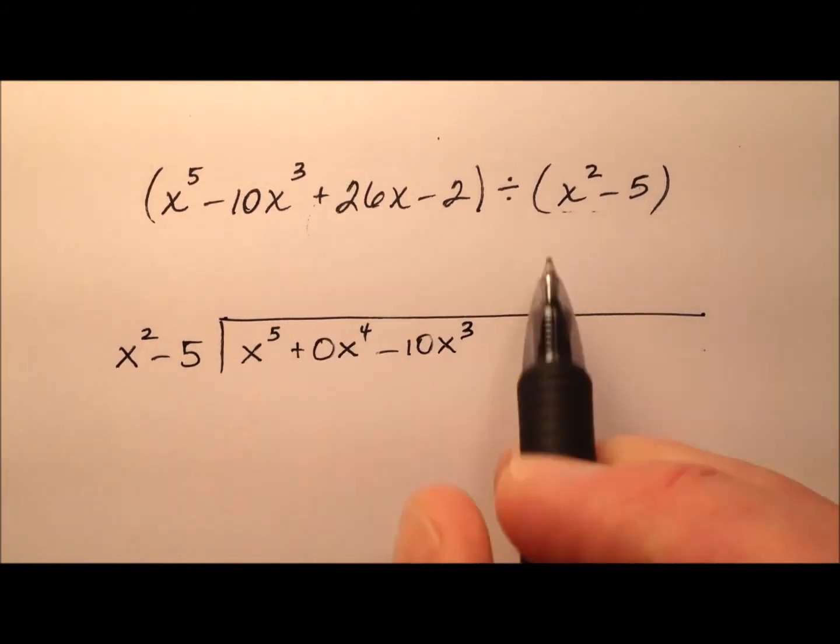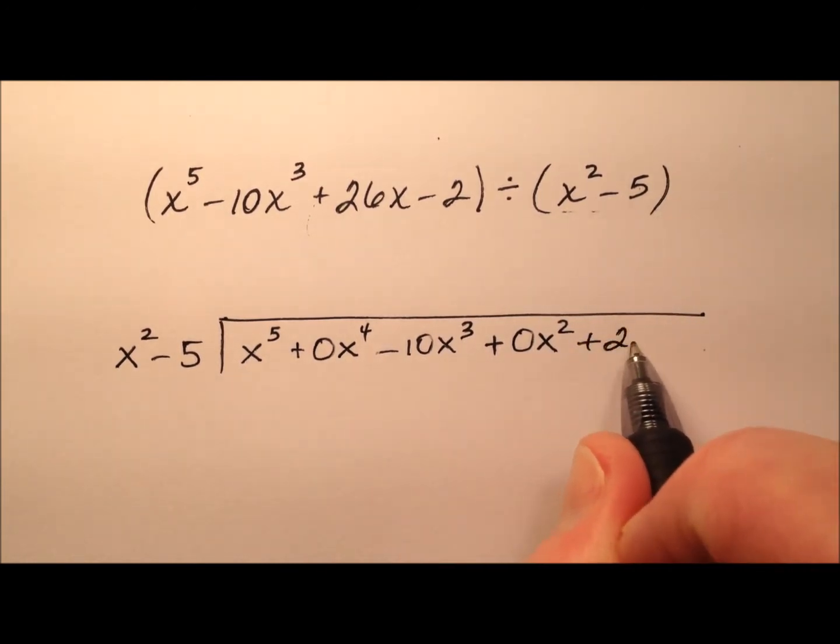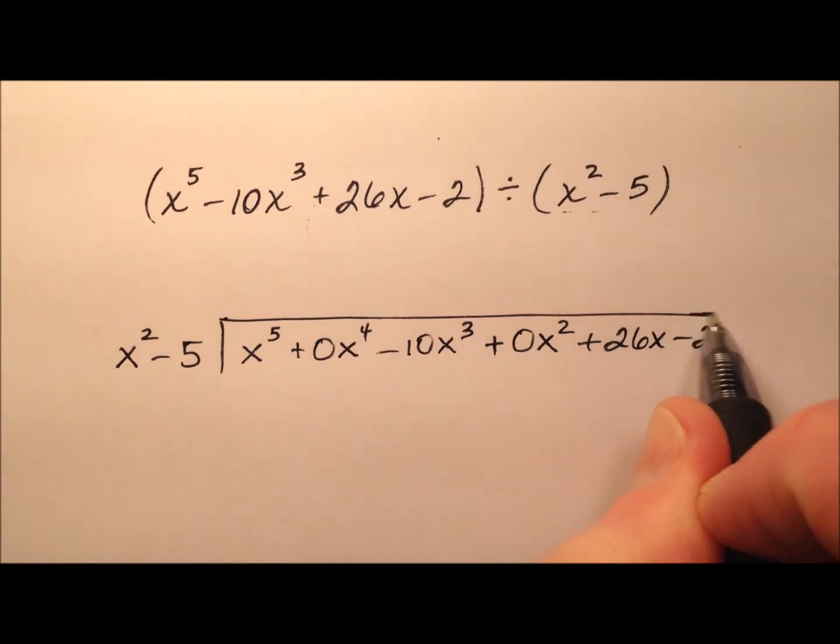I don't have a quadratic term here, the x squared, so I need to put a placeholder for him as well, so 0x squared. And then it looks like the rest of the terms are present so I can go ahead and write them down.